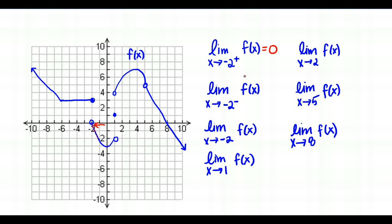So the limit as X approaches negative 2 from the right is 0. The next example is the limit as X approaches negative 2 from the left side. Going along the function from the left, we're getting closer and closer to a Y value of 3. So the limit from the left of negative 2 is positive 3.